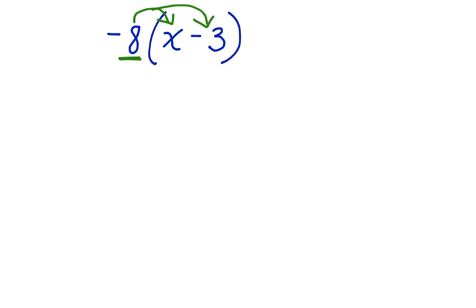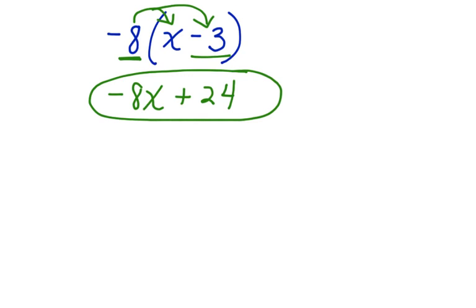Negative 8 times x is negative 8x. Negative 8 times a negative 3 is a positive 24. Negative 8x plus 24 is the simplified answer for this problem. Now I've been able to use number properties to simplify integer expressions.